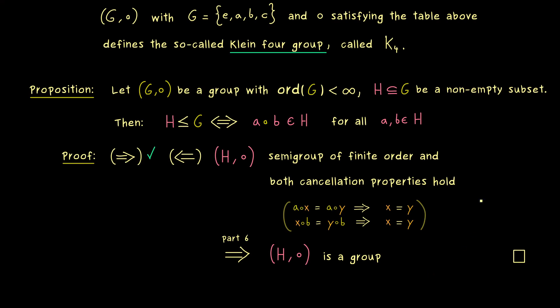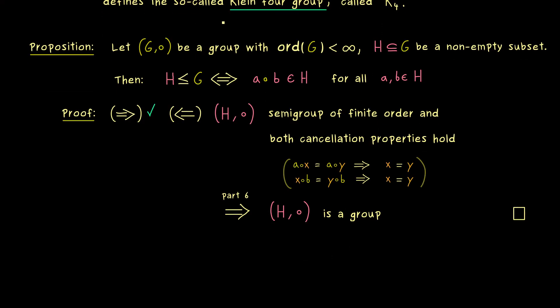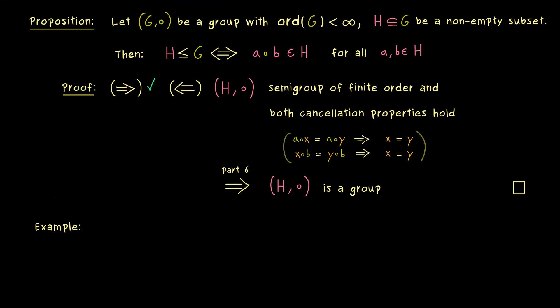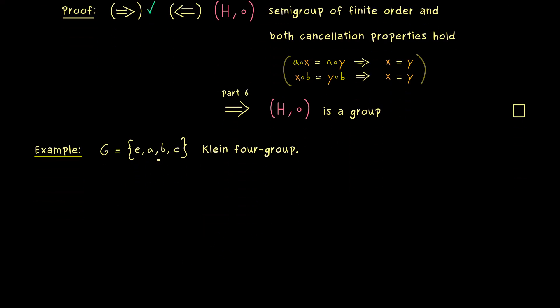Now as promised, this proposition we can use to look at the subgroups of the Klein four-group. So we can say, this is the important example of this video. Here we take the same names as before. We have the Klein four-group with the four elements E, A, B, and C.